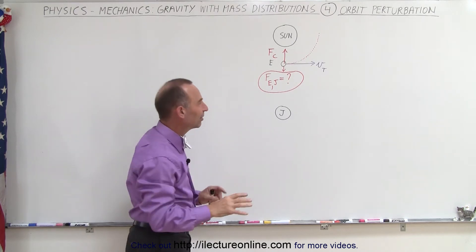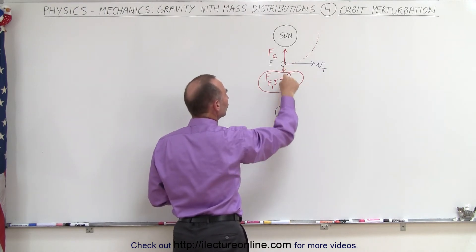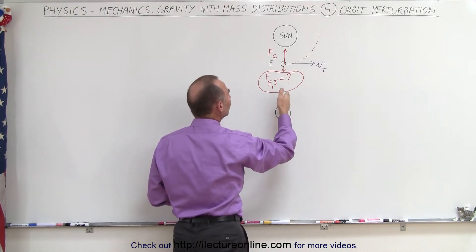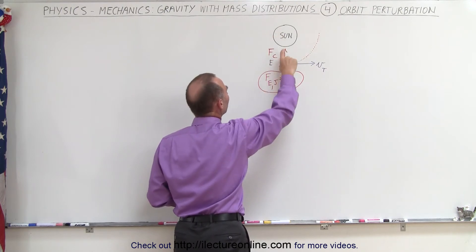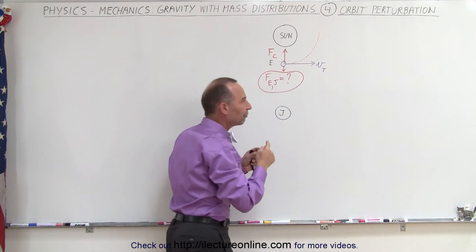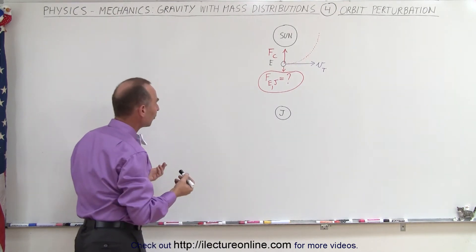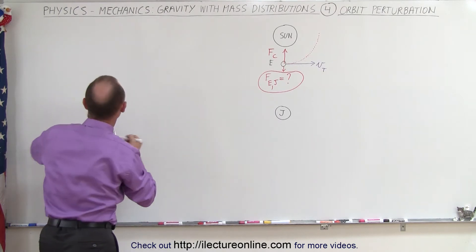So what we're going to do here is keep it simple. We're going to calculate the force between Earth and Jupiter and compare that to the force between the Sun and the Earth. This force between the Sun and the Earth is called the centripetal force, which is what keeps the Earth in its orbit. So let's first calculate the centripetal force between the Earth and the Sun.